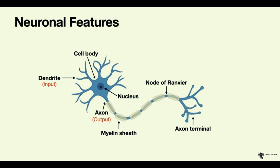This is a diagram of a basic neuron and all of its structural features. The cell body, which contains the nucleus and the DNA, has many protrusions which are called dendrites. These dendrites are where the neuron will receive impulses — it will receive a message from another neuron at its dendrite. So the dendrites are thought of as the input into the neuron.